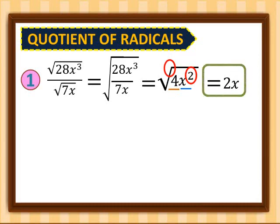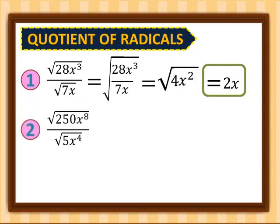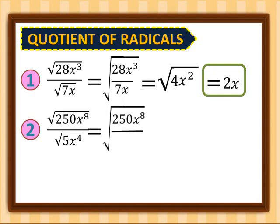So for number 1, we have 2x. For the second example, we have square root of 250x raised to 8 over square root of 5x raised to 4. Putting them into one radical gives us square root of 250x⁸ over 5x⁴. Simplify: 250 over 5 gives us 50, and x⁸ over x⁴ gives us x raised to 4.